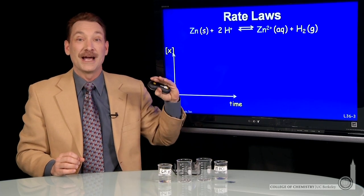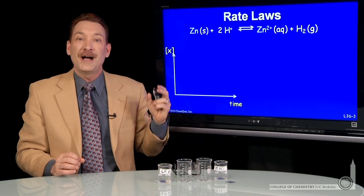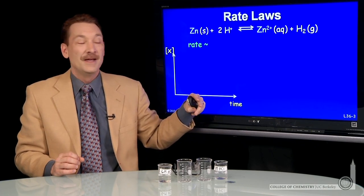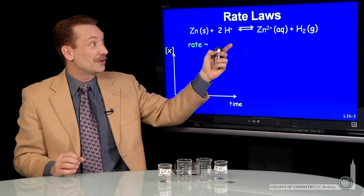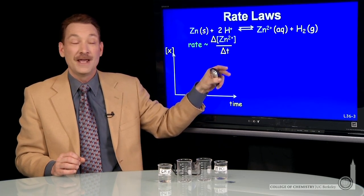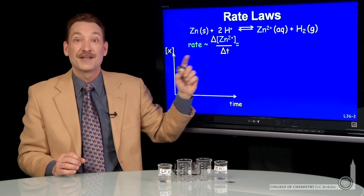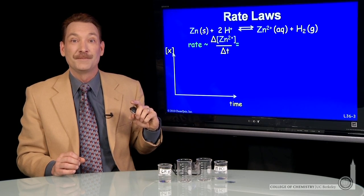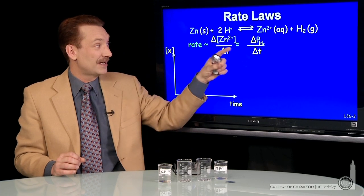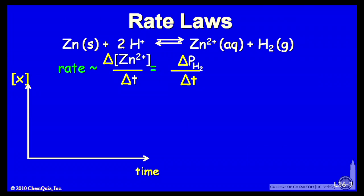Here's a chemical reaction, and we'll define the rate as the change in concentration over time. So for instance, for this chemical reaction, zinc ions will begin to appear over time, and hydrogen gas will begin to appear over time. So the rate will be defined as the change in concentration over time of the zinc ions or the change in the partial pressure of hydrogen over time.